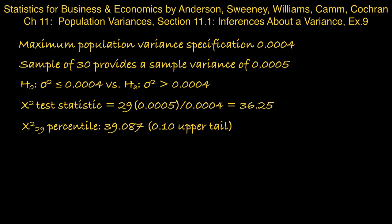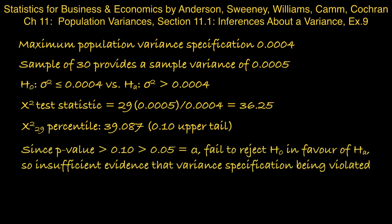So the tail area to the right of 36.25, which is the p-value, must be bigger than 0.10, the tail area to the right of 39.087. Therefore, since the p-value is bigger than 0.10, it's certainly bigger than 0.05, our significance level, and so we fail to reject the null in favour of the alternative. In other words, there's insufficient evidence that the variance specification is being violated.